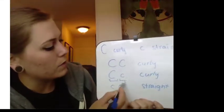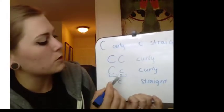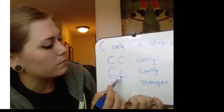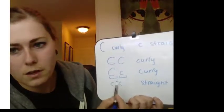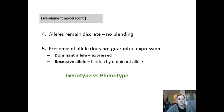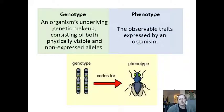Those heterozygous people with two different alleles can still produce offspring with straight hair. That's why it's important to understand the difference between genotype and phenotype. Genotype is the organism's underlying genetic makeup — both the visibly expressed and the non-expressed alleles. Phenotype is the observable traits expressed by an organism — what you can see about them, like brown hair or brown eyes.